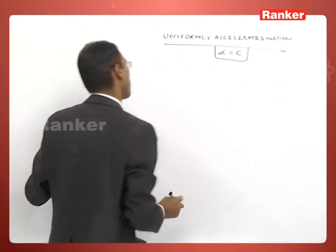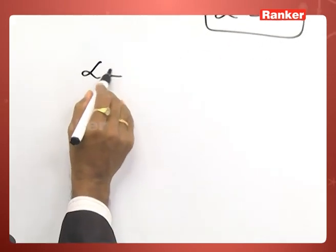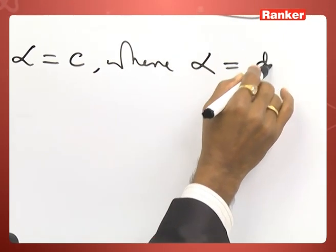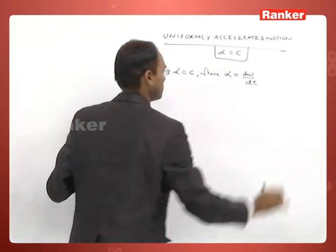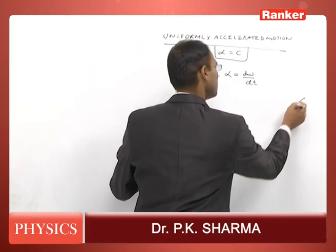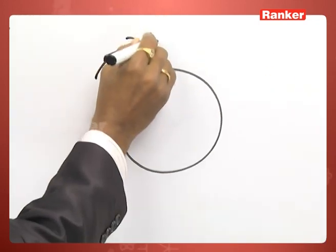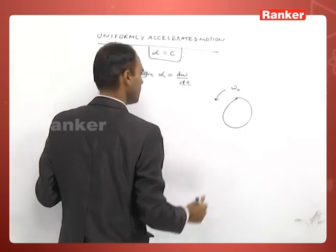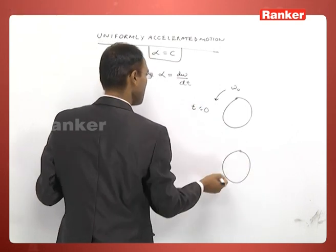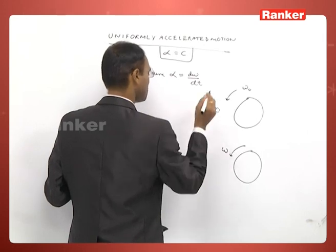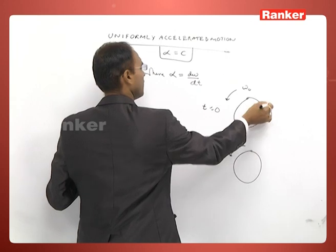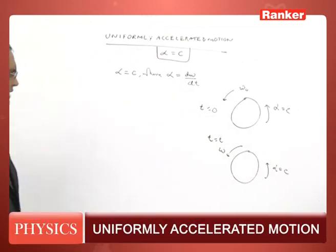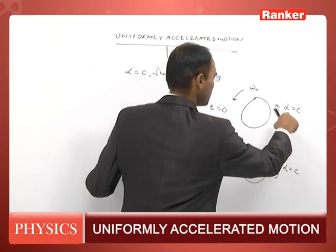Under uniform acceleration, angular acceleration alpha is a constant quantity and we put alpha equal to d omega by dt. Let us assume that this rigid body has initial angular velocity in positive direction omega naught at time equal to 0, and after some time its angular velocity becomes omega in the same direction at time t. Let us assume that angular acceleration of the rigid body remains constant both magnitude-wise and direction-wise.